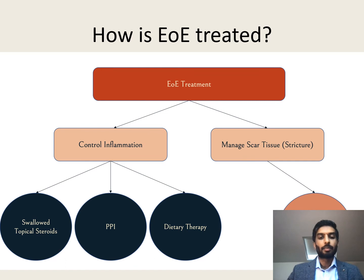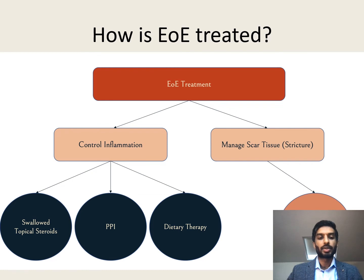The second component of therapy is to treat any scarring or stricturing that has already developed. Strictures are not responsive to any of the anti-inflammatory therapies we've just discussed; the only way they can be treated is by a process called dilatation — a procedure performed during endoscopy where we essentially stretch open that scar tissue to make the esophagus less narrow.